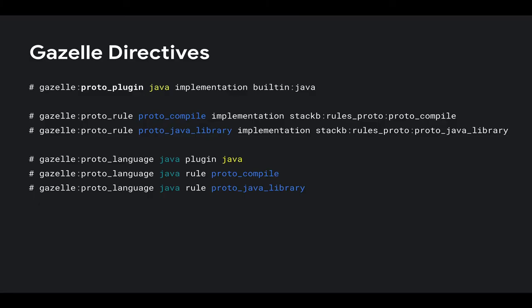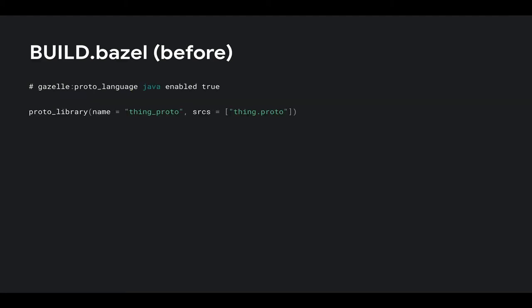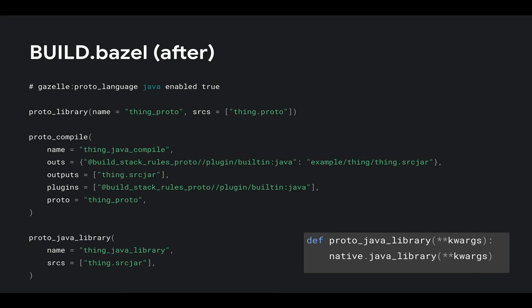These are the Gazelle directives. The first line is basically declaring that we're using the built-in Java plugin, assigning an identifier called Java in yellow. In the next two lines, we're declaring that we're using two rules, shown in blue. In the third part, we're tying those all together, giving it an identifier called Java. When we take a build file and say 'Gazelle proto_language Java is enabled' and you have a proto_library rule, when you run this, you get a proto_compile rule and a proto_java_library rule.